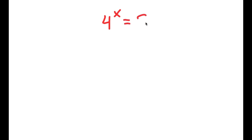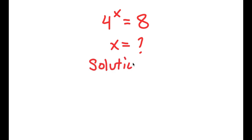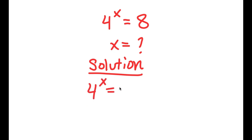So in this problem, I have 4 to the power of x is equal to 8. So obviously here, I want to find the value of x. For my solution, I'll first start by rewriting my problem: 4 to the power of x is equal to 8.